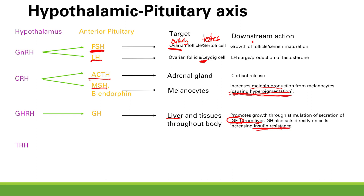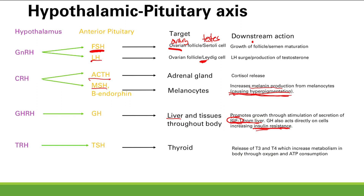Next we have TRH — thyrotropin-releasing hormone — which acts on the anterior pituitary to make thyroid-stimulating hormone, TSH, which obviously acts on the thyroid to make thyroid hormones T3 and T4. T3 and T4 increase metabolism in the body through oxygen and ATP consumption.